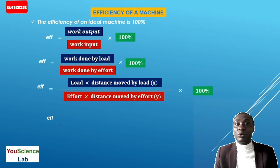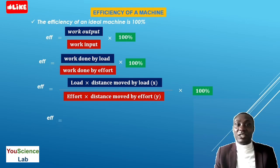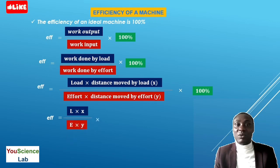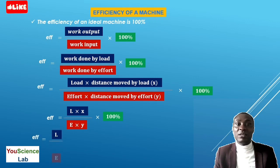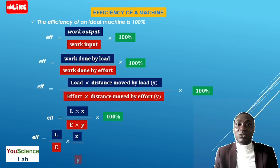Efficiency is equal to load times distance moved by effort, divided by effort times distance moved by load, times 100%. So we can rearrange this as: efficiency is equal to load times distance over effort times distance, times 100%.